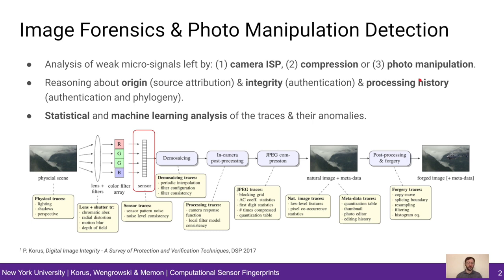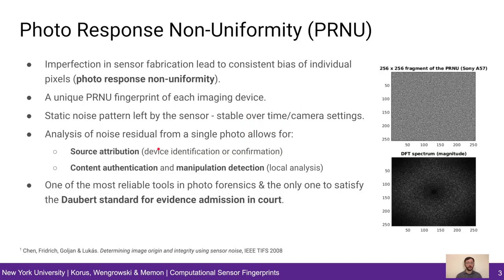Each step in the image acquisition pipeline leaves characteristic traces. In this presentation we will focus at the sensor level. We have to define PRNU — photo response non-uniformity. Essentially, it's a static noise pattern left by the sensor. It's unique for each imaging device and can serve as a fingerprint. Analysis of noise residuals from individual images allows source attribution and manipulation detection. It's currently one of the most reliable tools in image forensics and the only one to satisfy the Daubert standard for evidence admission in court.